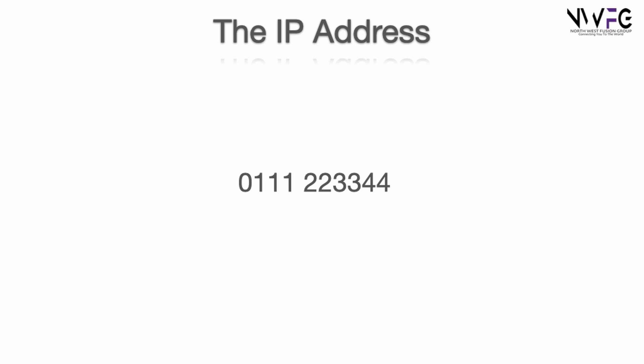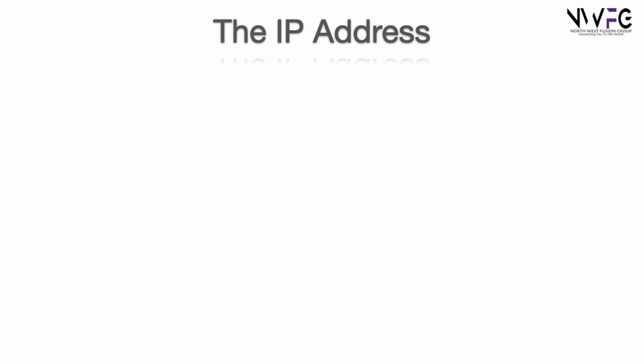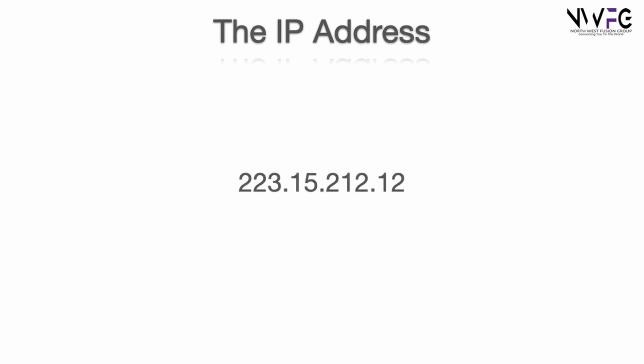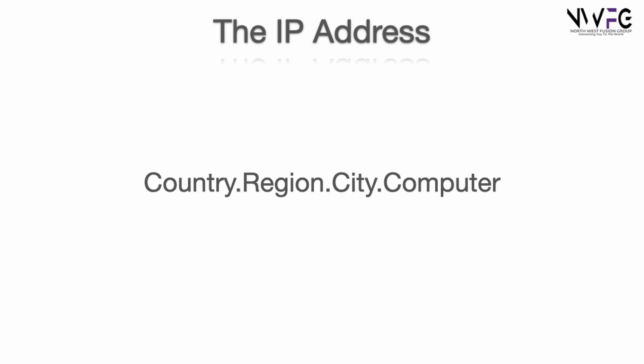You can also add in the area code for international calls — again, we're used to this: country, region, telephone. We can think of an IP address in the same way. Here's a typical IP address and, while not strictly accurate, you can think of it as: country, region, city, computer. Basically, an IP address is like a telephone number for computer devices. It's a good analogy and I'll continue to use it throughout this video.